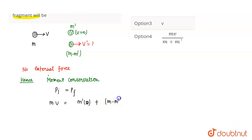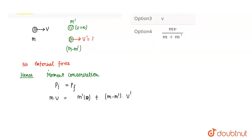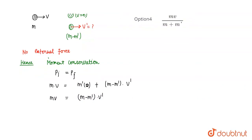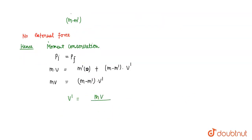हमें v' की value find out करनी थी - जो second fragment का velocity मतलब है। यह term पूरा 0 हो गया। यहां से m×v = (m-m')×v'। तो v' की value कितनी हो जाएगी - m×v divided by m-m'।